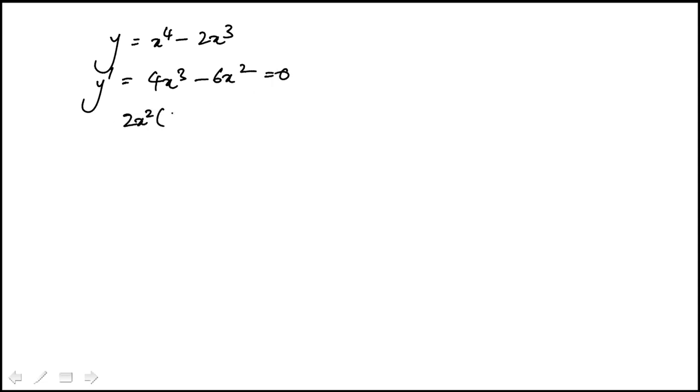So 2x squared times 2x minus 3. So possible extrema at x equal to 0 and x equal to 3 over 2.